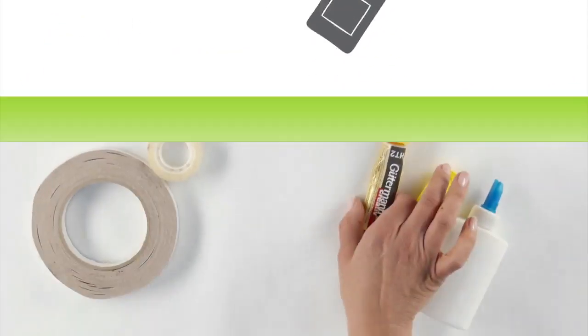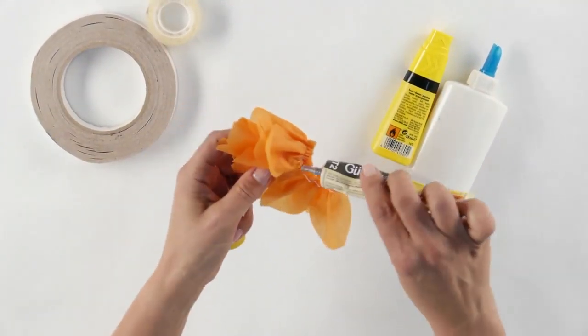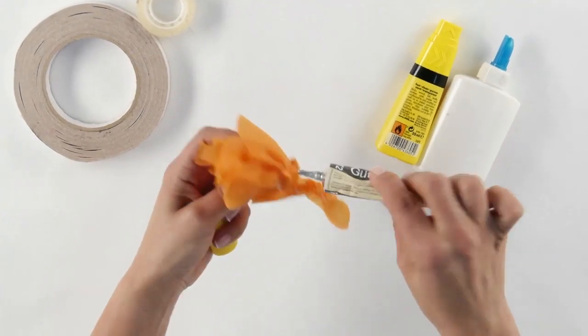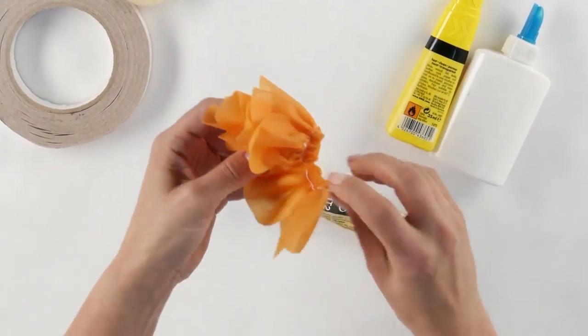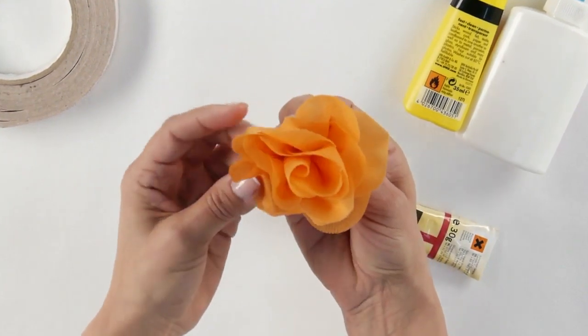Gluing. All sorts of adhesives work on SmartFab except for hot glue. Drying times will vary depending on the glue you choose. For the strongest, fastest drying results, we recommend using fabric glue.